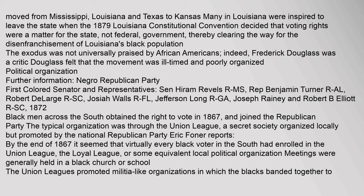Black men across the South obtained the right to vote in 1867 and joined the Republican Party. The typical organization was through the Union League, a secret society organized locally but promoted by the National Republican Party. By the end of 1867 it seemed that virtually every black voter in the South had enrolled in the Union League, the Loyal League, or some equivalent local political organization. Meetings were generally held in a black church or school.